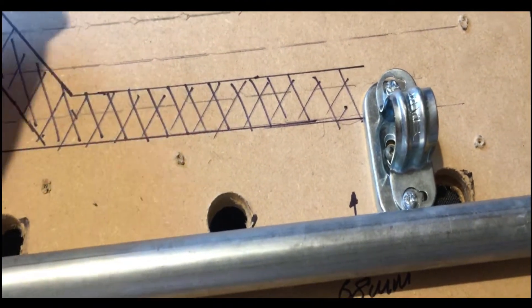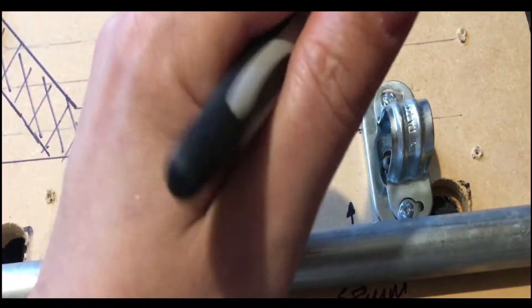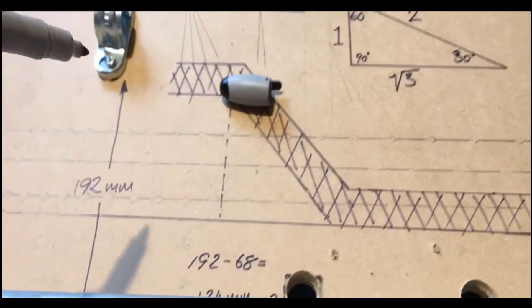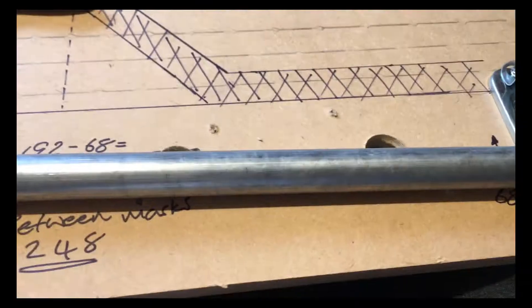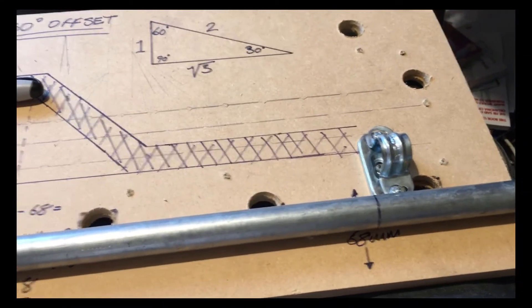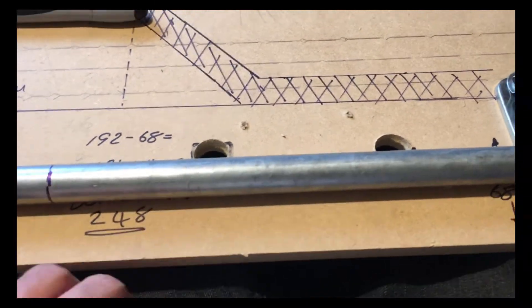Then hopefully after bending it at a 30-degree angle, I should be able to get my set and it should fit into this template here. So I'll try that. Okay, so I've marked my conduit here at 248 millimeters.